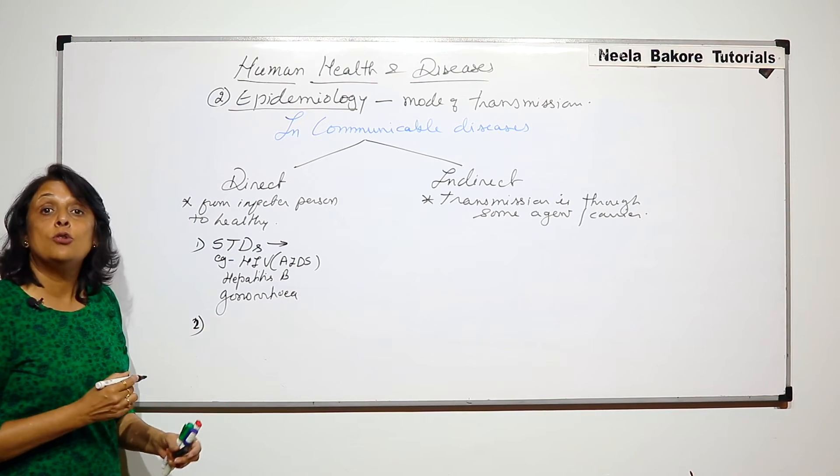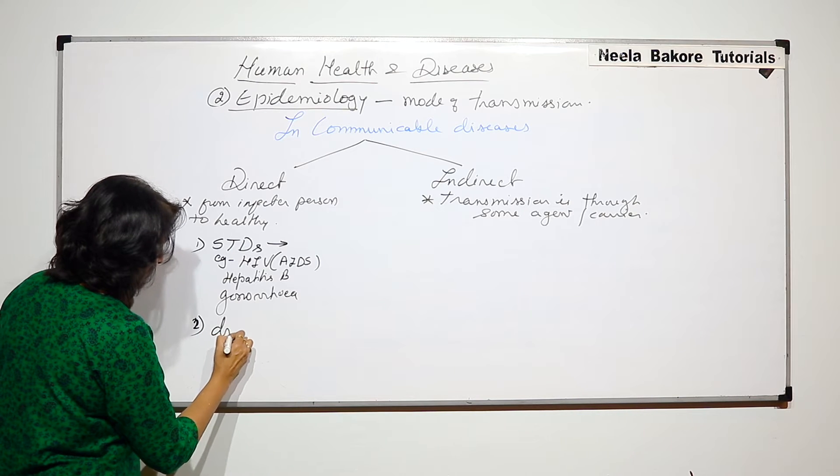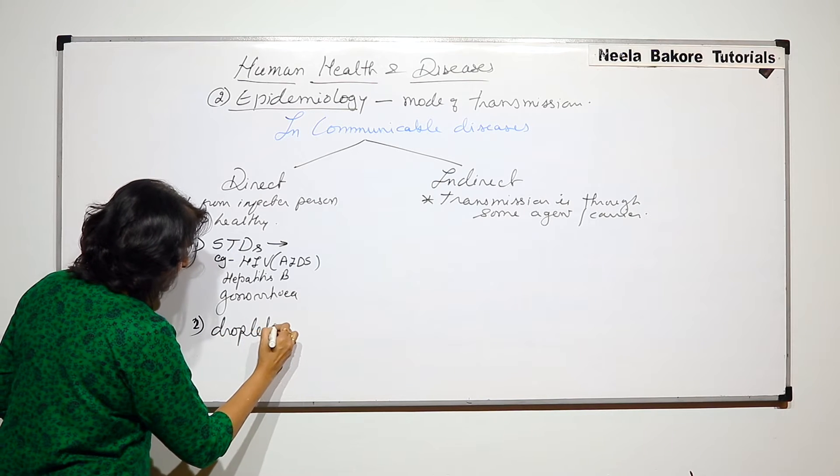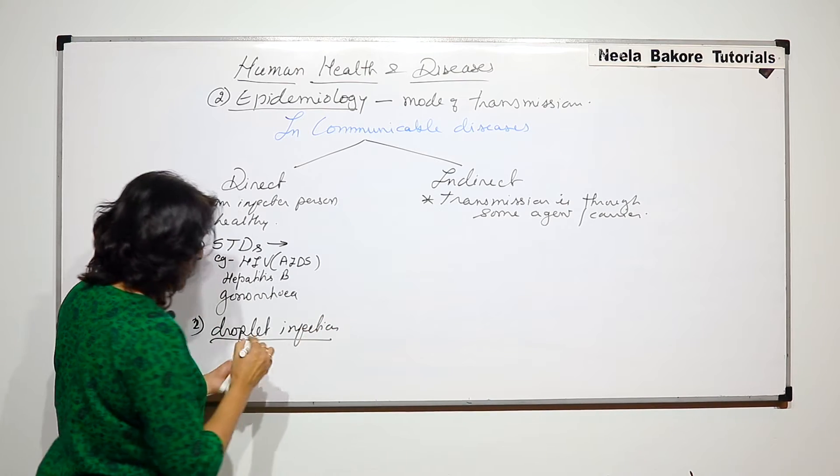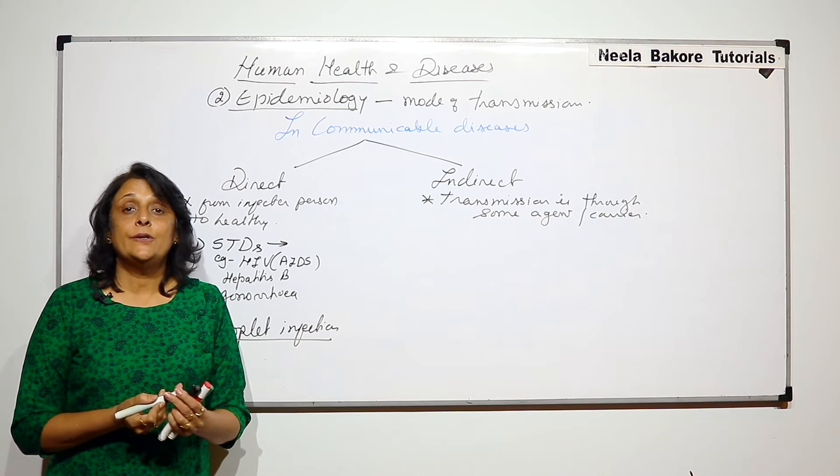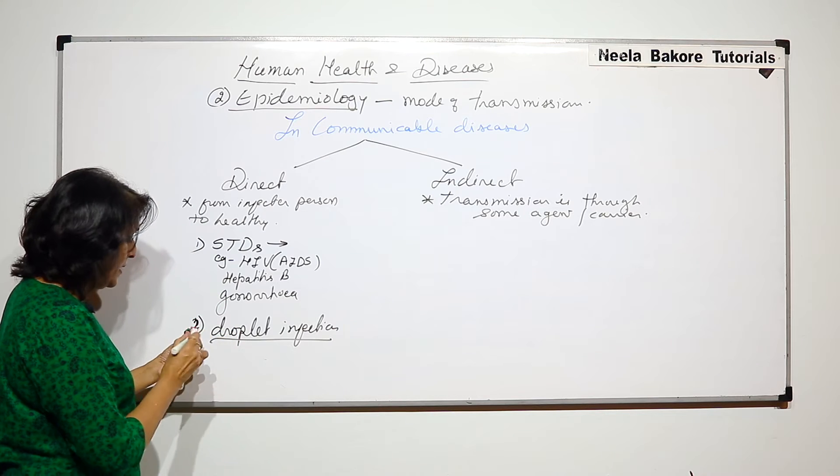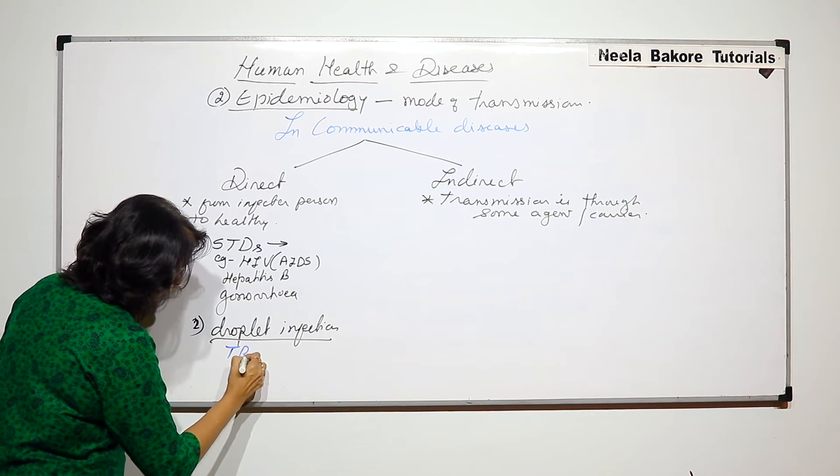The second is droplet infection. Now what is meant by droplet infection and which disease can be transmitted by this method? We can take the example of TB.